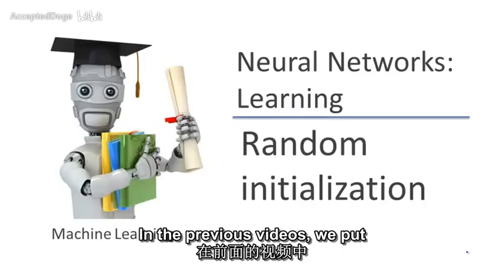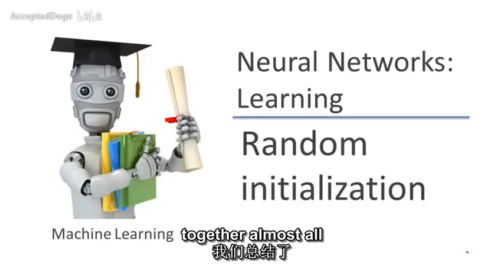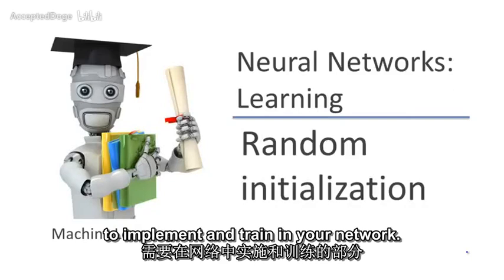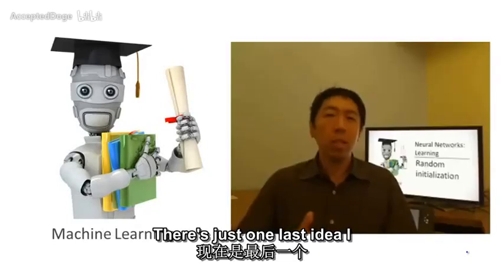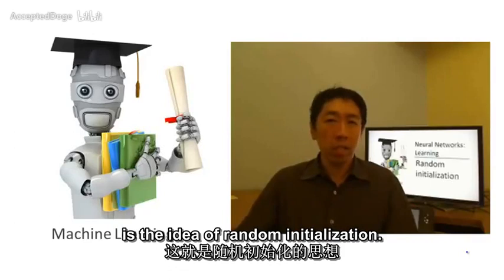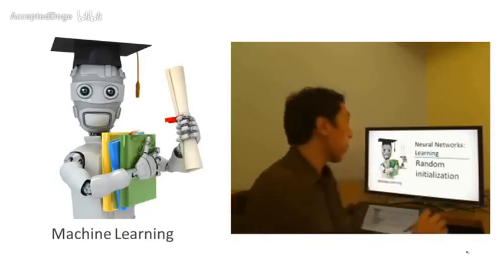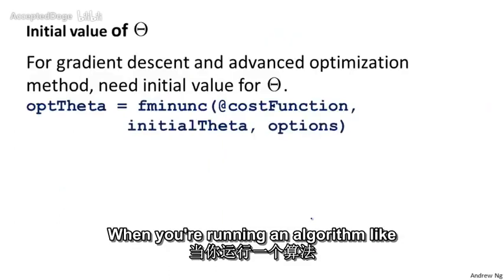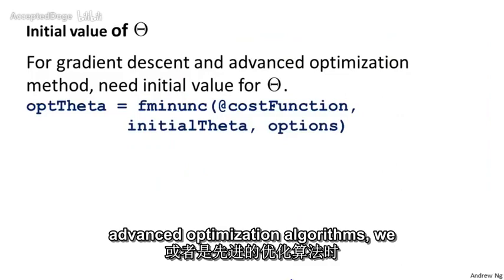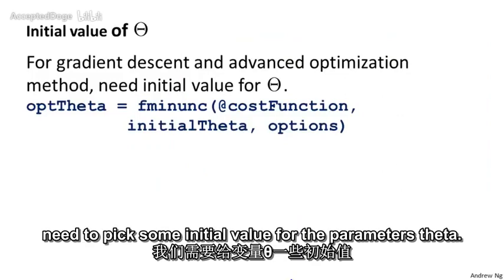In the previous videos, we've put together almost all the pieces you need in order to implement and train a neural network. There's just one last idea I need to share with you, which is the idea of random initialization. When you're running an algorithm like gradient descent or the advanced optimization algorithms, we need to pick some initial value for the parameters theta.